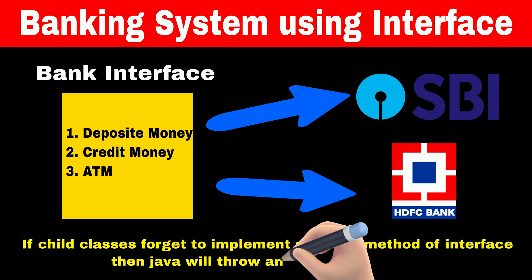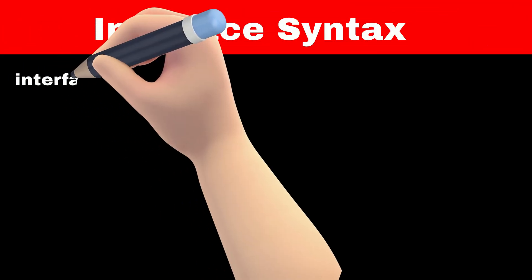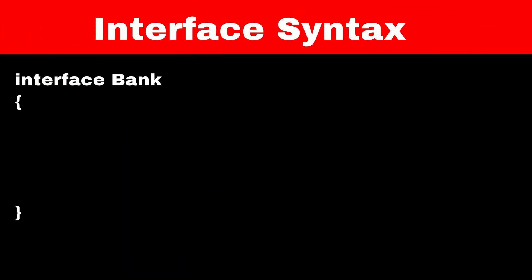If SBI and HDFC classes are inheriting from the bank interface, then they have to implement all the functions mentioned in the bank interface. So let's declare the interface with the name bank. For defining the interface, we have to write the interface keyword and then the name of the interface — in our case it's bank.